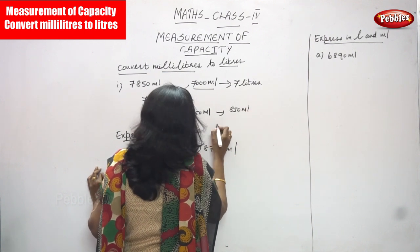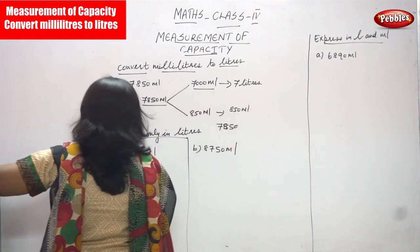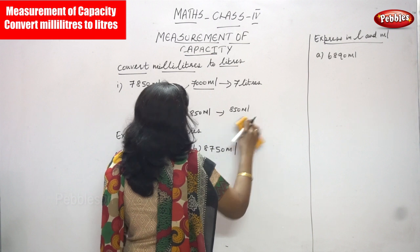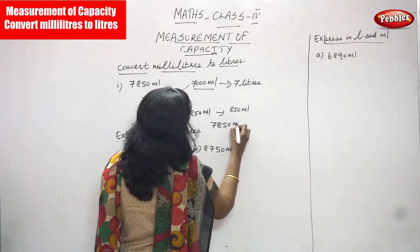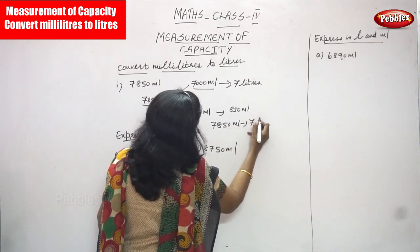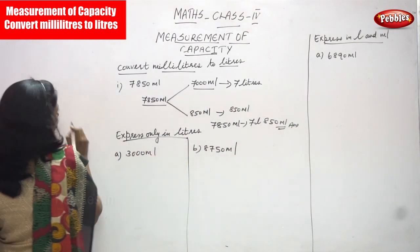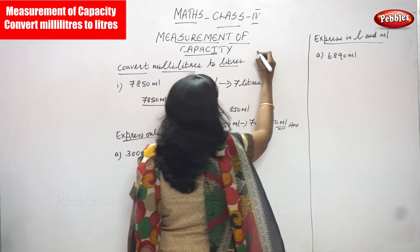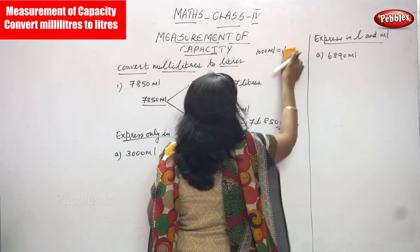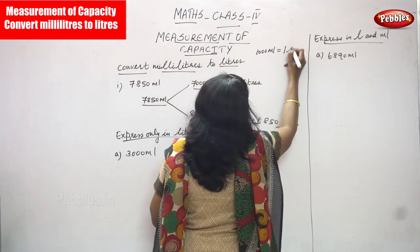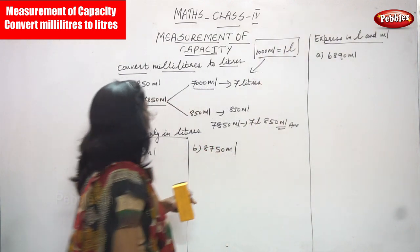The answer is: 7850 milliliters equals seven liters and 850 milliliters. You know that 1000 ml is equal to 1 liter. That is the formula you are applying here.